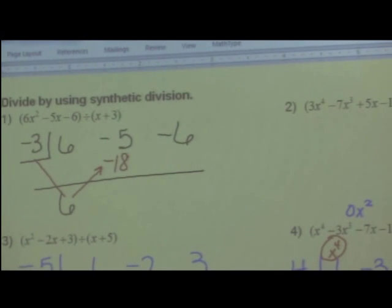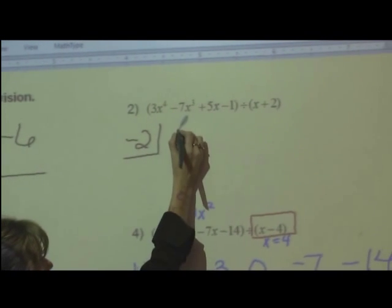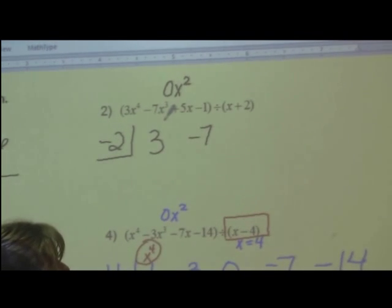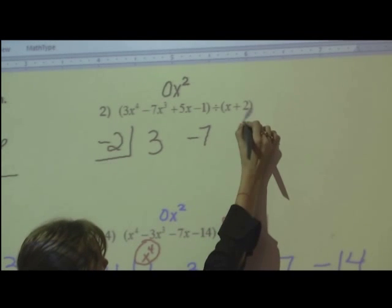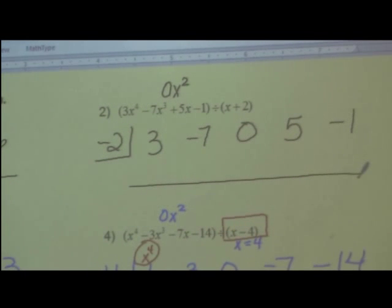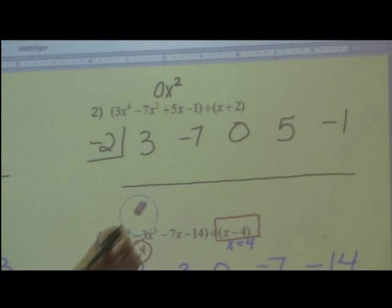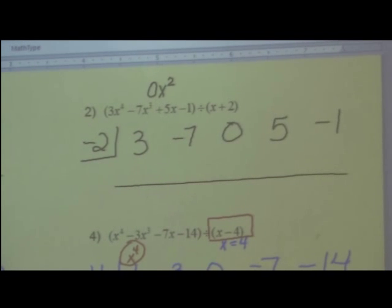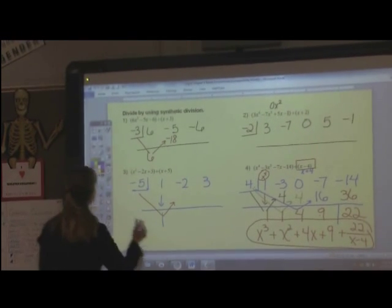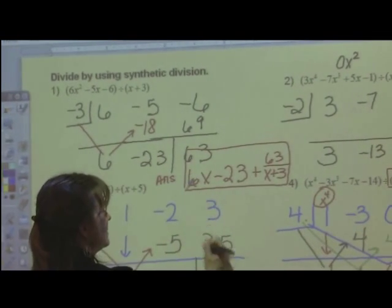And one more, on this side over here. Negative 2 is the number that goes in the box. 3, negative 7. There is no x squared. So I have to put in a placeholder, a 5, and a negative 1. And then, of course, you do synthetic division from there. So I will put the answers up. Pause the video if you need to at this point, work these three out on your own while I'm putting the answers up.